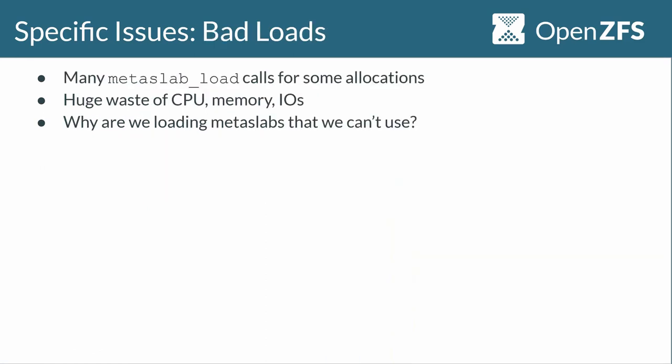All these factors combined into a perfect storm of terrible performance. As we dug in, the first high-level problem we saw was that for some allocations we were calling metaslab load a dozen times or more in the worst cases. Loading a metaslab can take a second, so spending seconds on a single allocation is really bad — you want IOps per second, not seconds per IO. We were wasting huge amounts of CPU loading metaslabs, huge amounts of memory storing their range trees, and wasting many IOs reading space maps from disk.